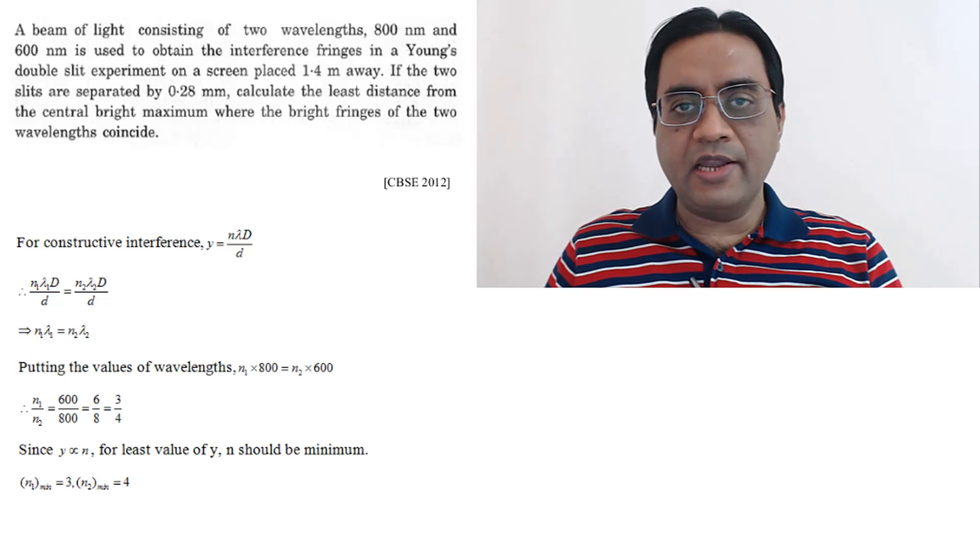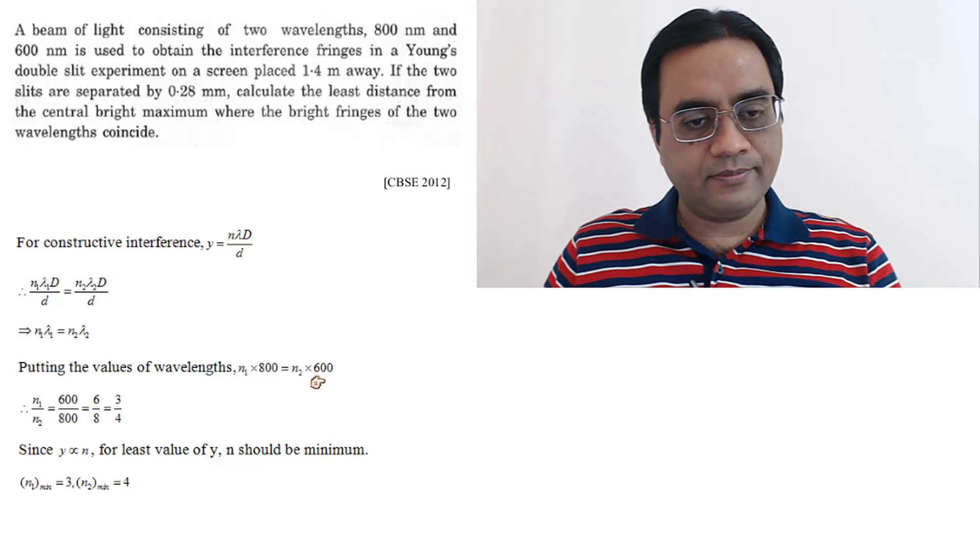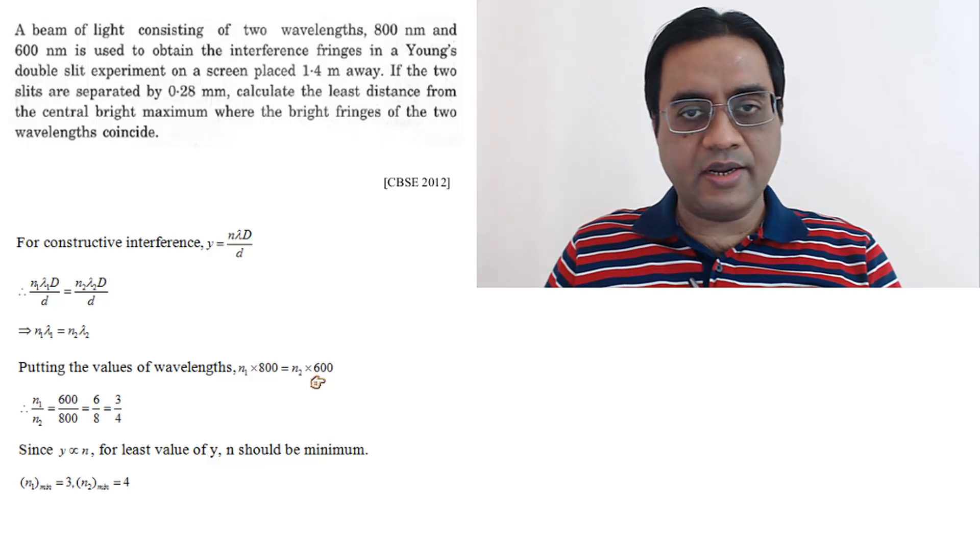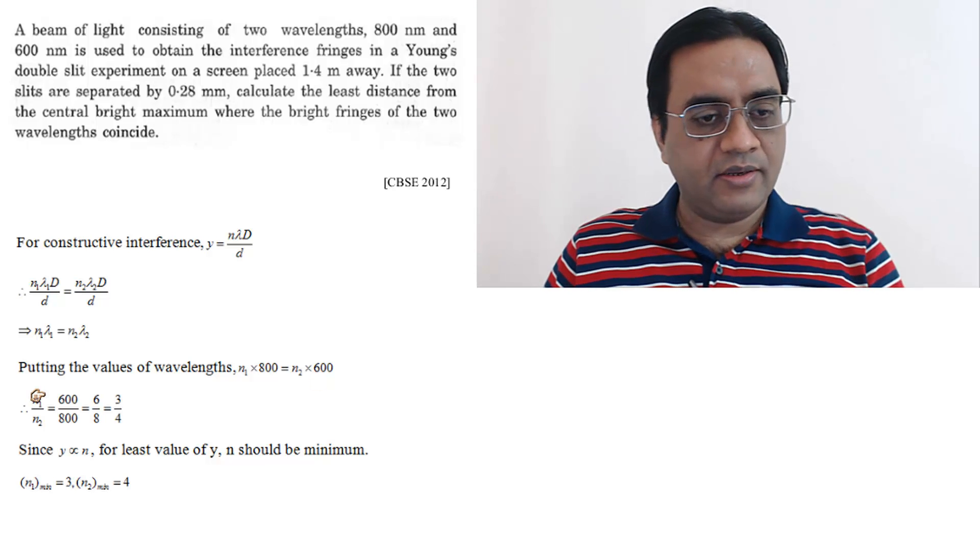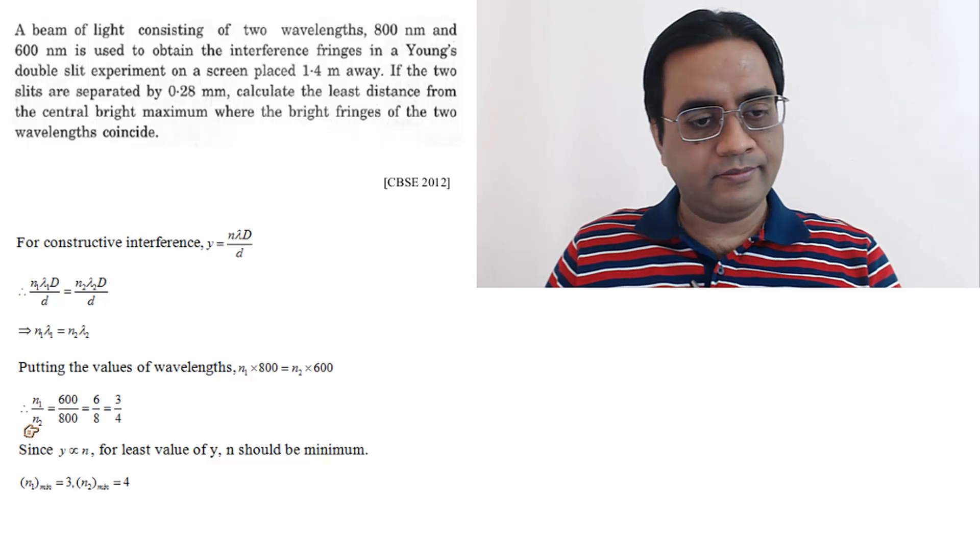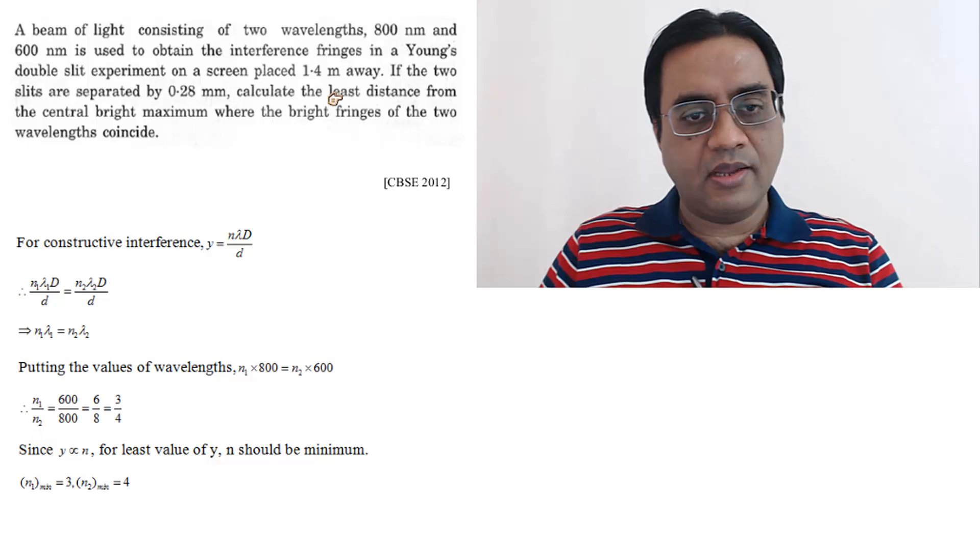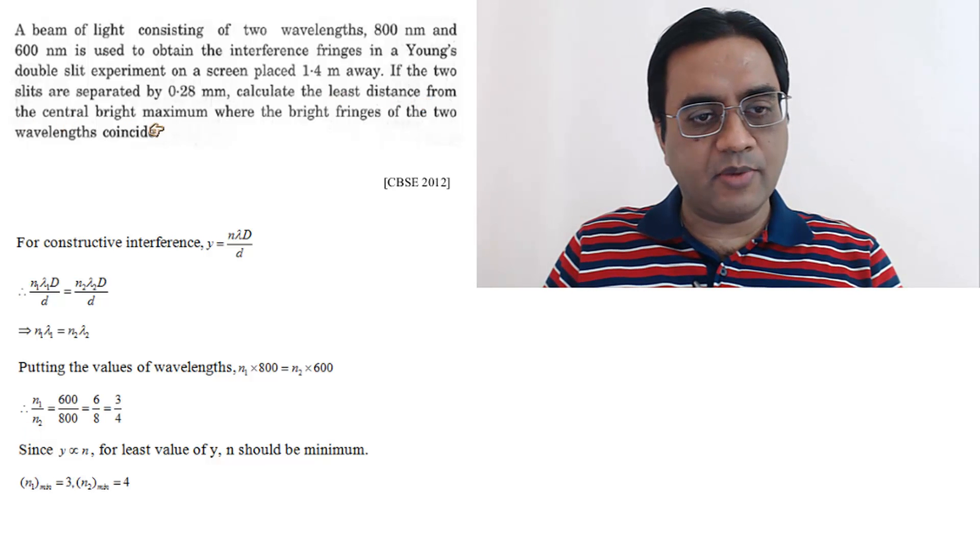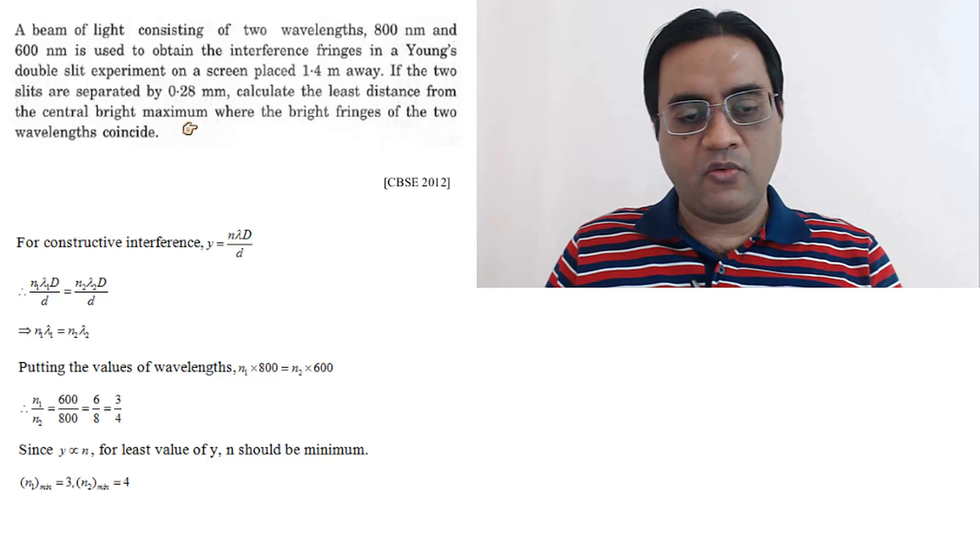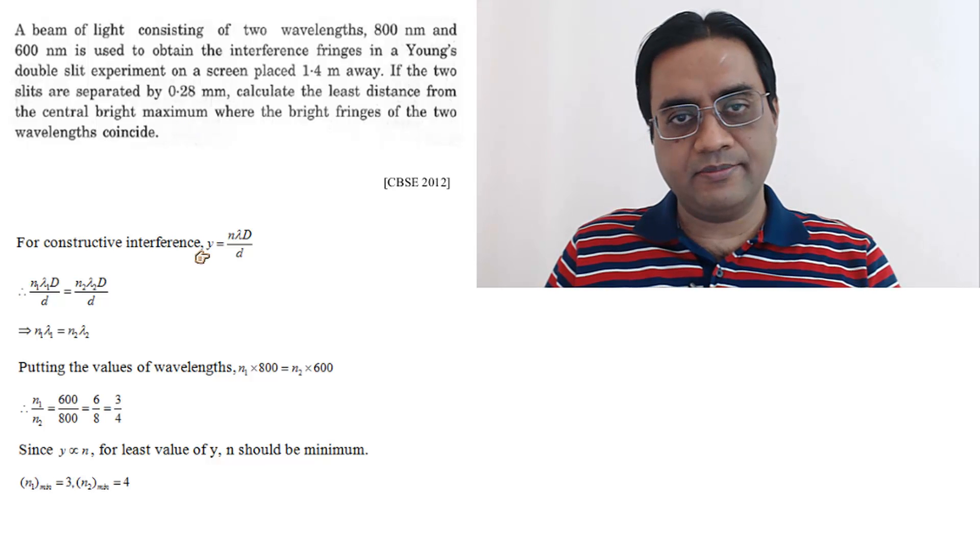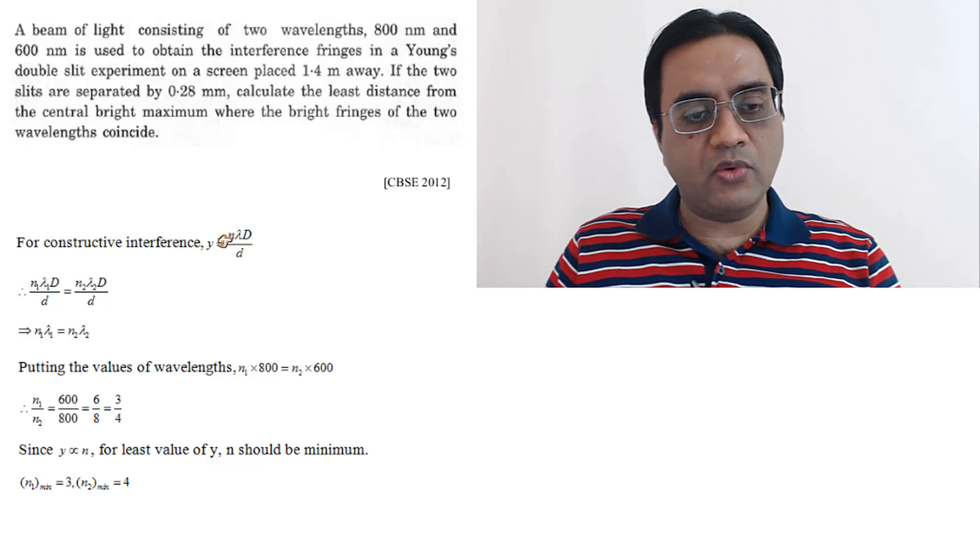Putting the values of wavelengths, we get the ratio of n1 to n2. Since we want the least distance from the central bright maximum, Y should be smallest, but y is proportional to n.